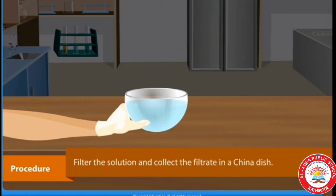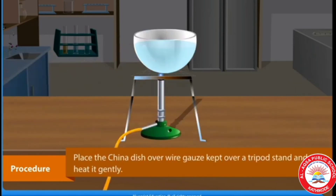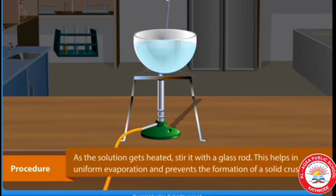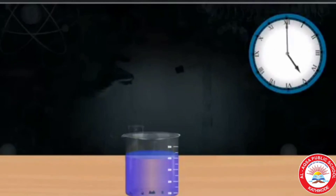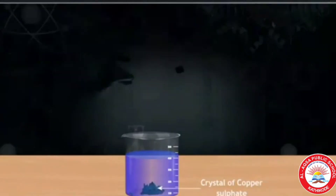Filter the solution and collect the filtrate in a china dish. Place the china dish over wire gauze kept over a tripod. As the solution gets heated, stir it with a glass rod — this helps in uniform evaporation and prevents the formation of a solid crust. Allow it to cool and do not disturb the solution while cooling. After some time, we can see blue-colored crystals of copper sulphate are formed.